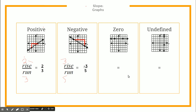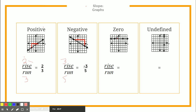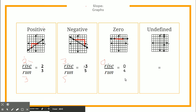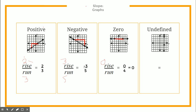Zero slope is super easy to calculate. You look and see there is really no rise — the line didn't go up in any vertical way at all — so my rise is 0. I do have a run though: drawing the line from one dot to the other gives me 1, 2, 3, 4, so that's 0 over 4, which equals 0. If you understand that a horizontal line is a zero slope, you can just write your answer as 0.